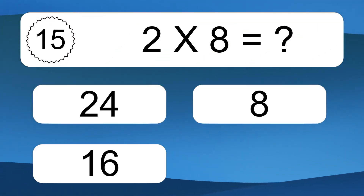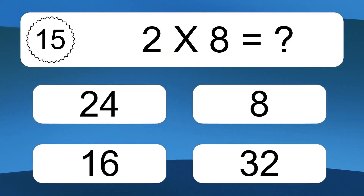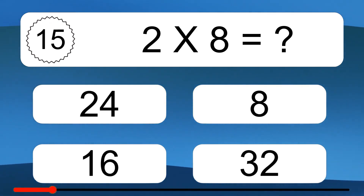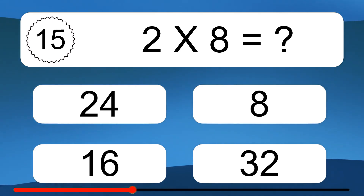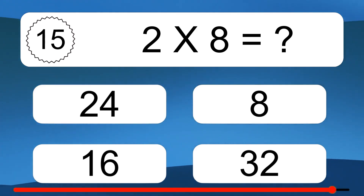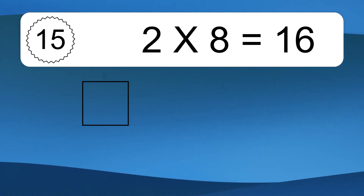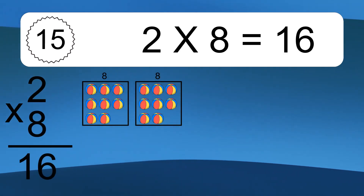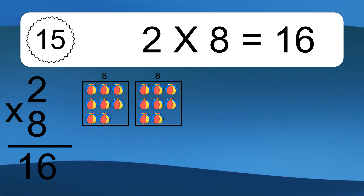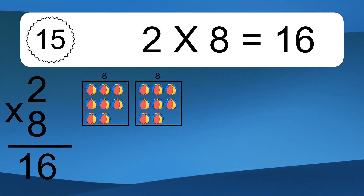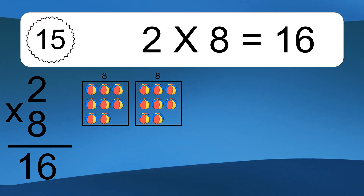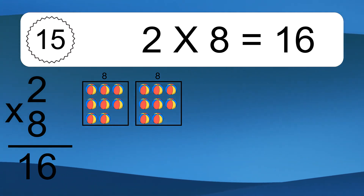2 times 8 equals 16. We have 2 boxes and each box has 8 colorful balls inside. If you count all the balls in all the boxes together, you will have 2 times 8 balls. This equals 16 balls.